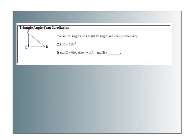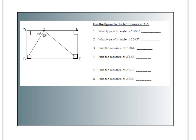The triangle angle sum corollary says that the acute angles of a right triangle are complementary. Think about it: if the sum of the angles is 180 and you have a right angle, 180 minus 90 leaves 90. So angle A and angle B together have to be 90 degrees — they're complementary. If the measure of angle C is 90 degrees, then the measure of angle A plus the measure of angle B also equals 90 degrees. Please pause the video and try numbers 1 through 6.